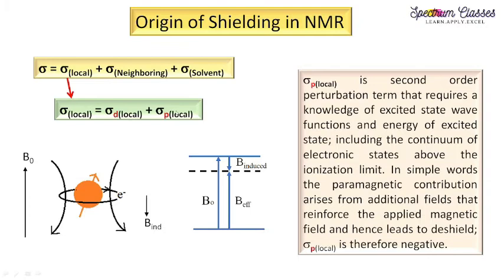Now we discuss sigma p. Sigma p is a second-order perturbation term that requires knowledge of excited-state wave functions and the energy of the excited state. While sigma d is calculated from the ground state, sigma p requires knowledge of both ground and excited state wave functions, as well as the continuum of electronic states above the ionization limit.